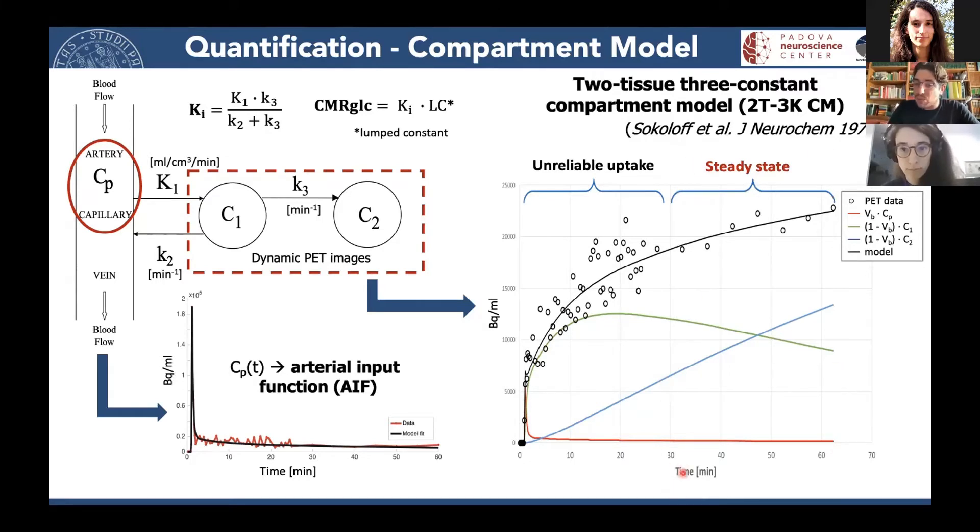If instead we focus on what is happening in the second part, so after 30 minutes, but even later, 40, 45, as you can see, the FDG which is phosphorylated is linearly increasing and accumulating. And so in the end, we are going to measure something that is much more closely related to K3, and so to actual glucose metabolism.